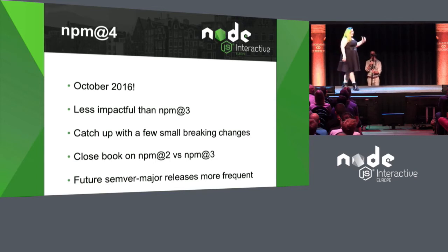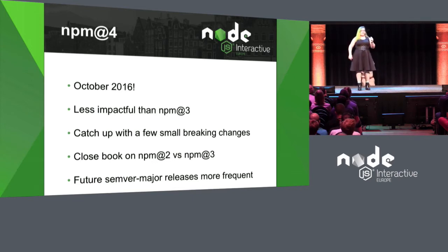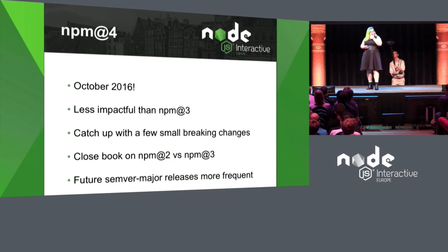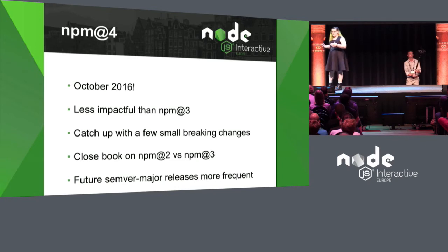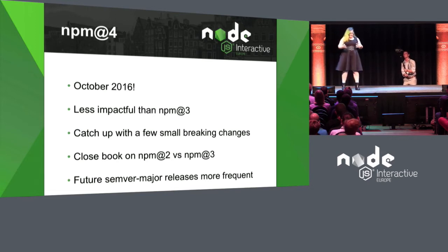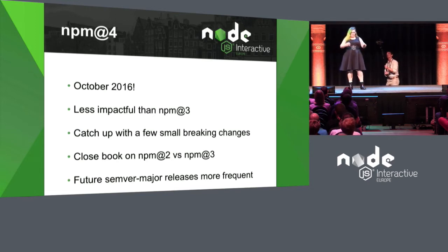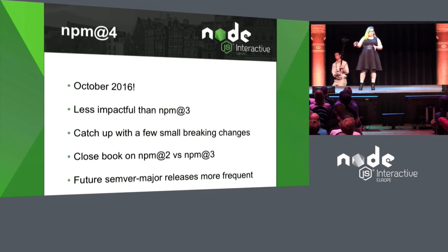Next up is NPM 4, coming in October 2016. It's a lot smaller and less impactful than NPM 3 — not an earth-shaking release, but Semver means one breaking change gets a major bump. We've been collecting a few small breaking changes over time and will do some now. Part of the purpose is to close the book on the NPM 2 versus NPM 3 perception issue. Some people still see them as two different things. So: let's just get to NPM 4, move on, and make sure people are on the latest version.